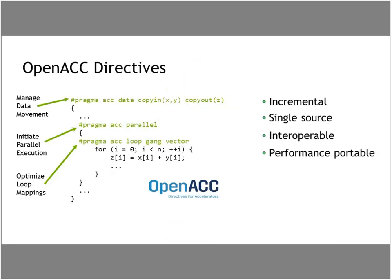So what does OpenACC look like? If you're a C or C++ programmer, it comes in the form of compiler pragmas you may or may not have used before. If you're a Fortran programmer, it comes in the form of compiler directives, which are special comments. Throughout this course most participants are interested in C, so we'll be showing C examples in the slides, but everything applies to Fortran as well.